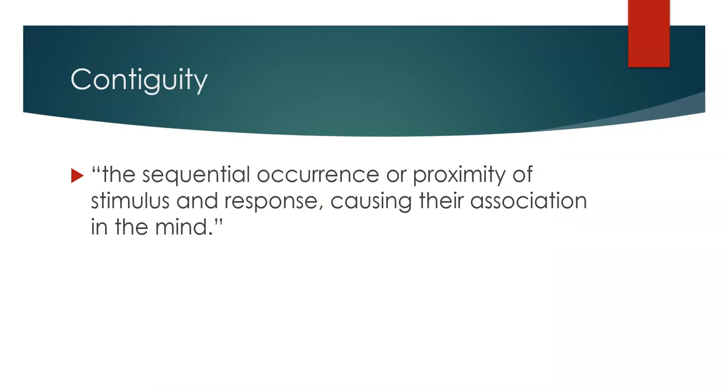The next tip is about the principle of contiguity. In the context of psychology, the definition of contiguity is the sequential occurrence or proximity of stimulus and response causing their association in the mind.